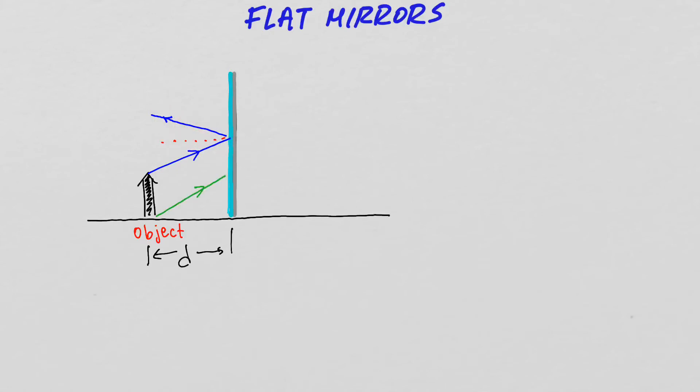Now let's look at a ray that starts from the bottom of the object. This ray is going to reflect from the mirror, obeying the law of reflection. Again, here is the normal to the surface. This is the reflected light ray. And so the two light rays will intersect somewhere here in front of the mirror.